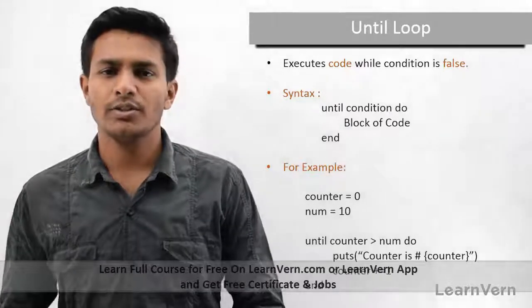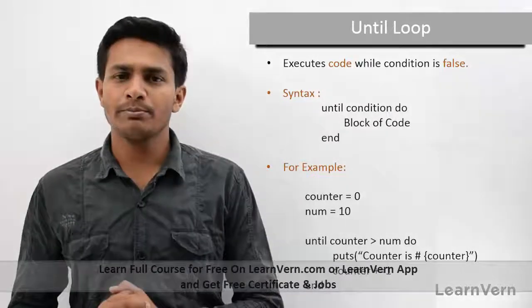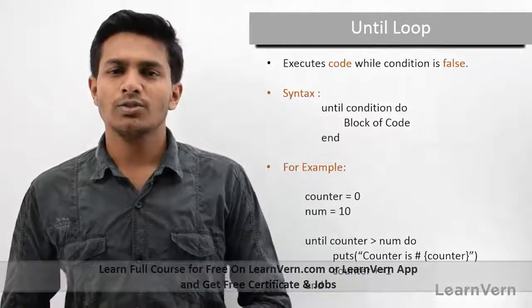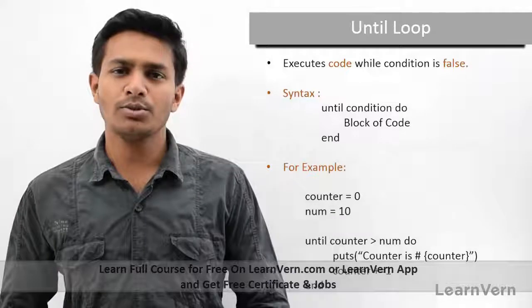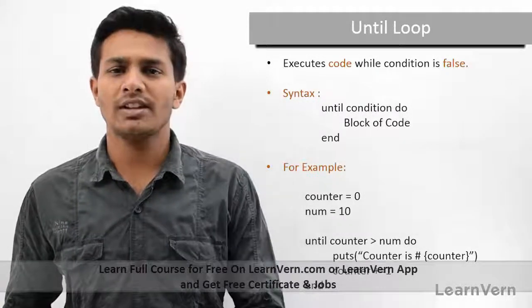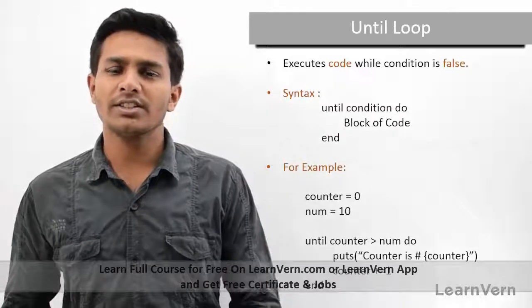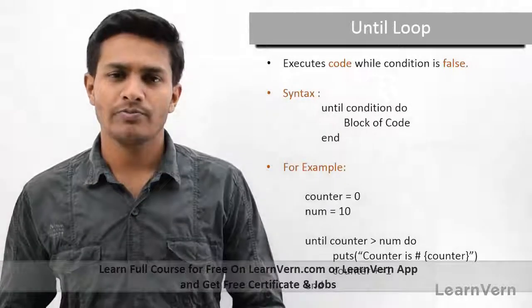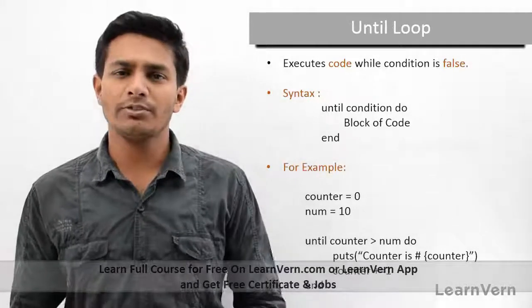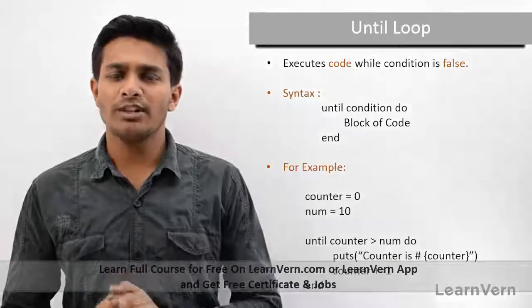It will print my number and increment the counter and loop ends. First when loop enters execution, my counter is zero and my number's value is 10. So zero is greater than 10, that will return false, so it will execute my block of code and increment the counter value by one. So counter value becomes one.